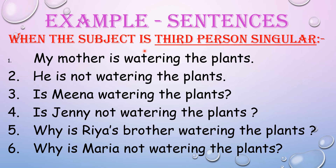Examples when the subject is third person singular (he, she, it, or any singular noun): positive — "My mother is watering the plants." Negative — "He is not watering the plants." Interrogative positive — "Is Mina watering the plants?" Interrogative negative — "Is Jenny not watering the plants?" WH family positive — "Why is Ria's brother watering the plants?" WH family negative — "Why is Maria not watering the plants?"